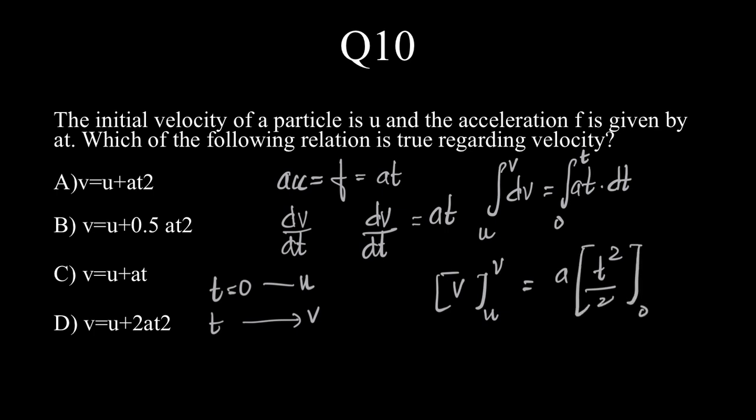Which means v minus u is equal to a into t square by 2 minus 0 square by 2, which further means that v is equal to u plus a t square by 2.